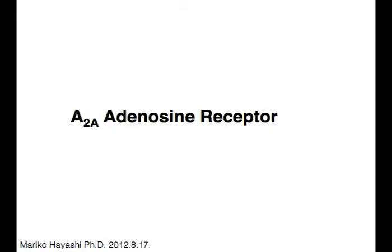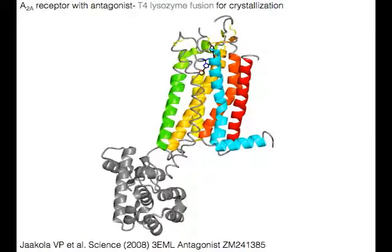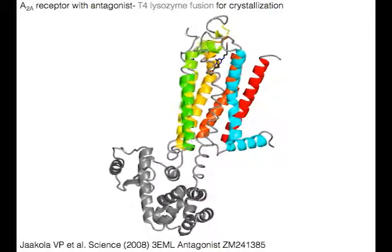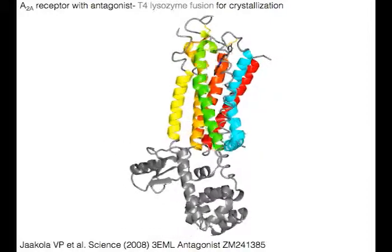A2A adenosine receptor and its ligands. The A2A receptor is shown with an antagonist, and a gray T4 lysozyme fused for crystallization.